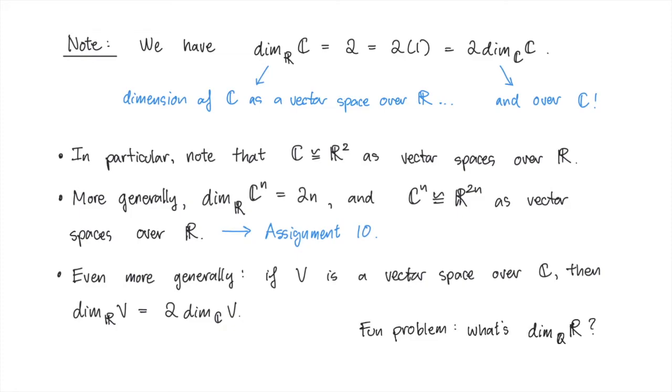As a fun and perhaps quite difficult problem, think about the real numbers considered as a vector space over the rational numbers. What does this vector space look like? Can you write down a basis? What is the dimension of this vector space over Q?